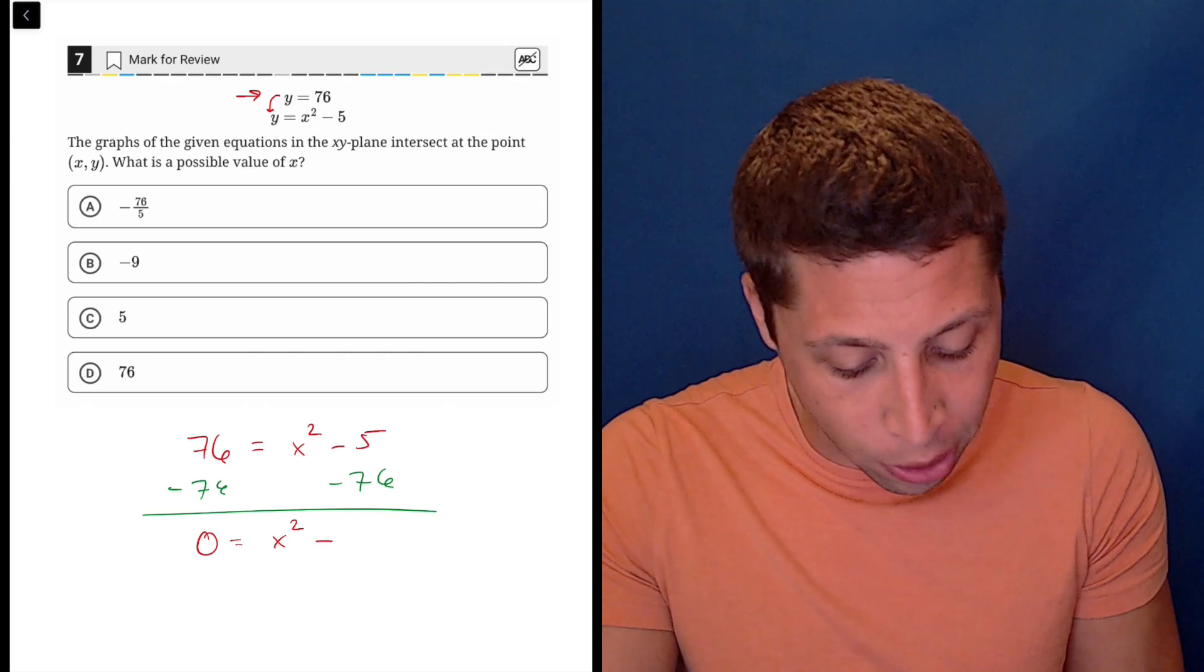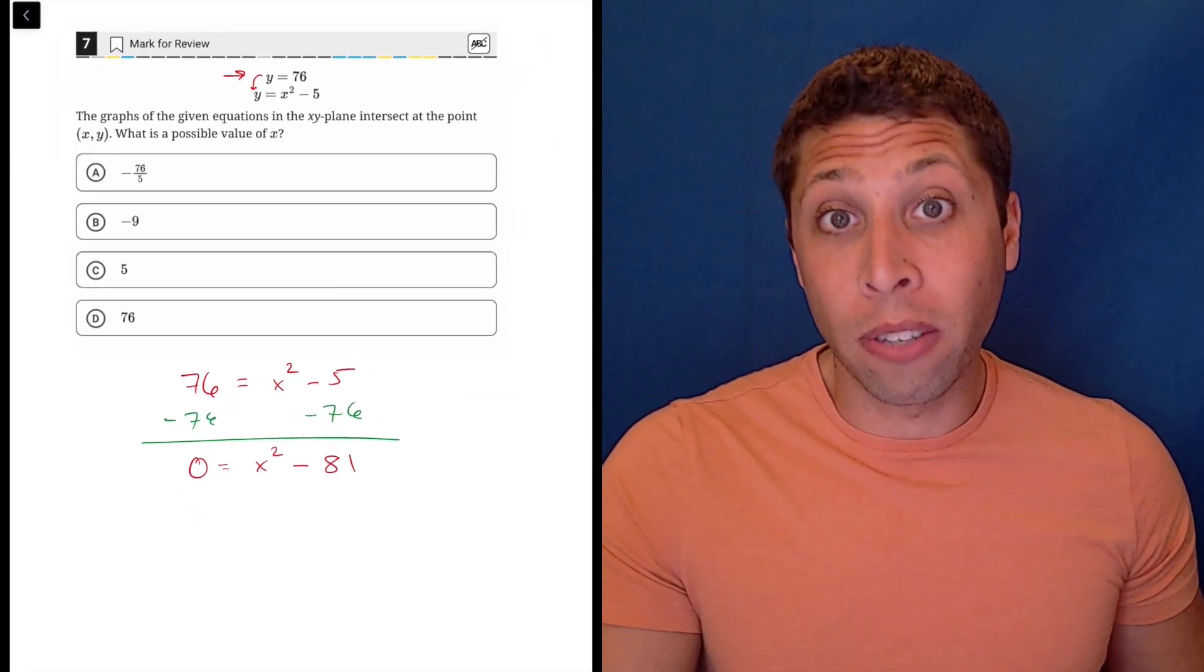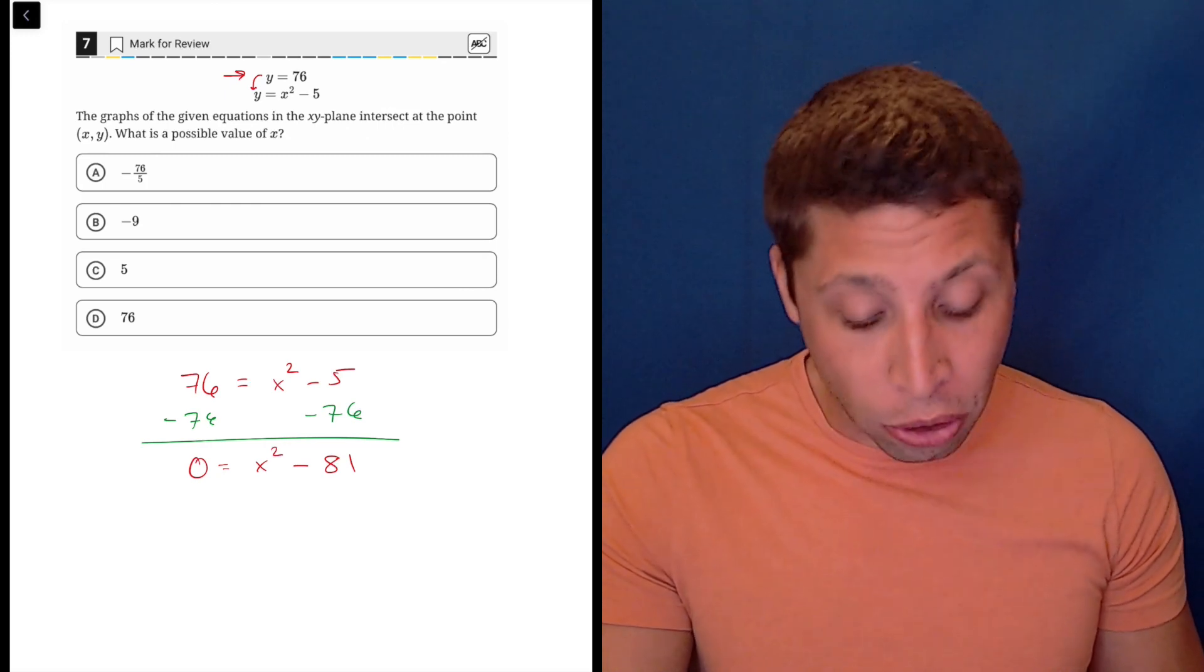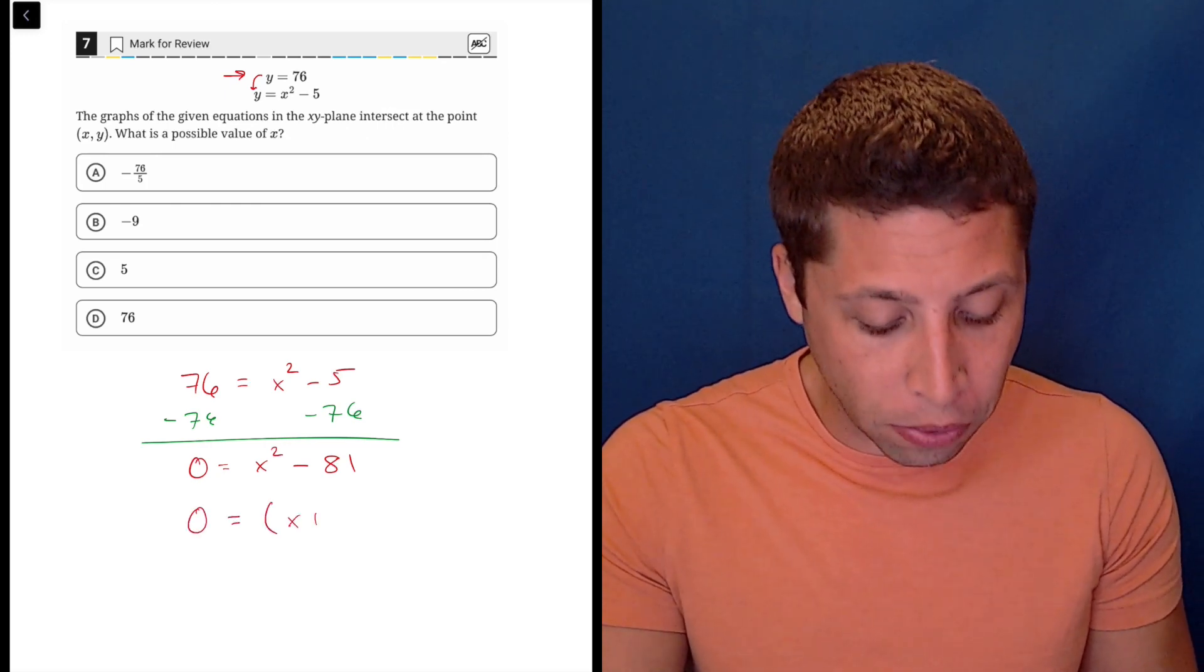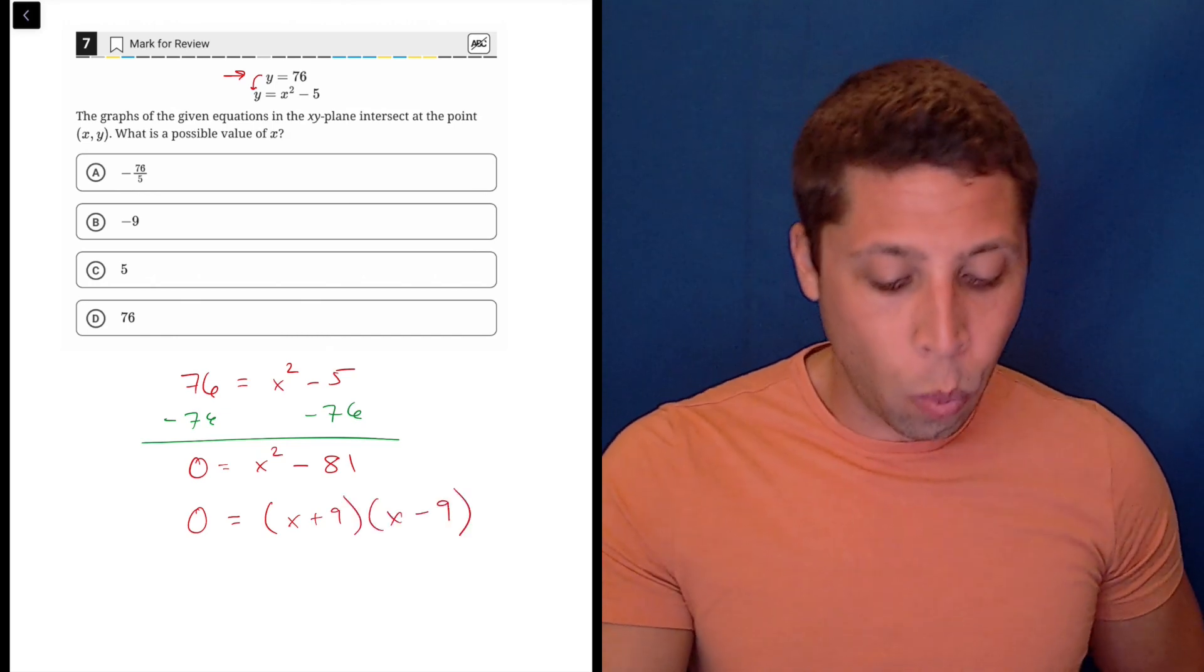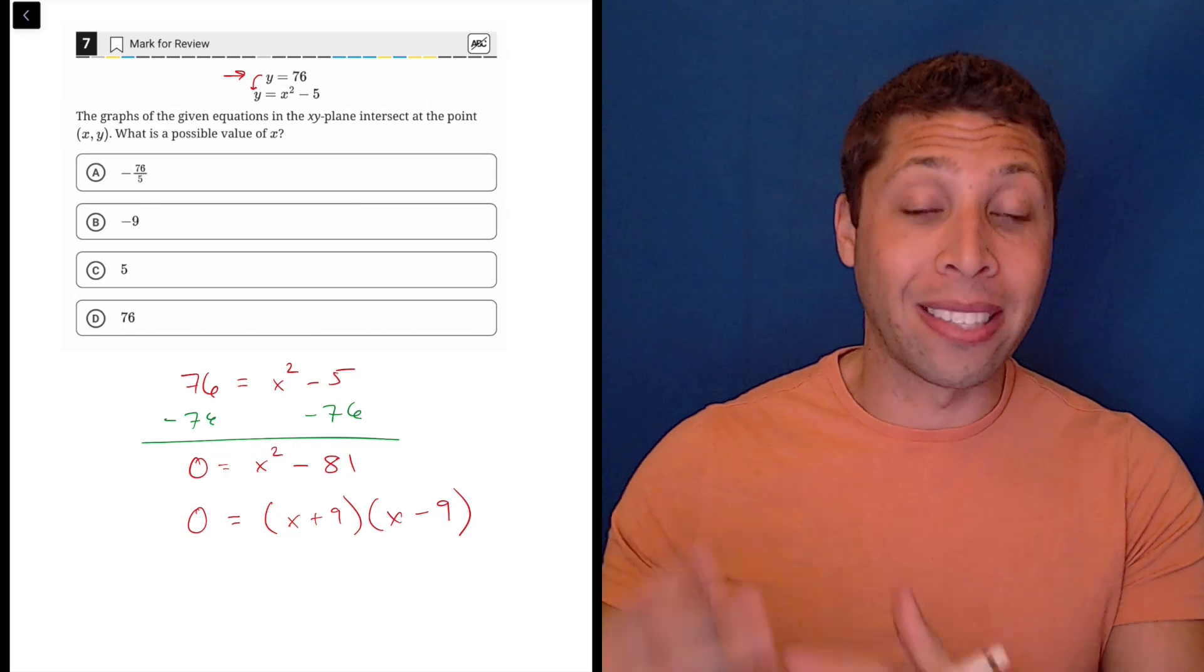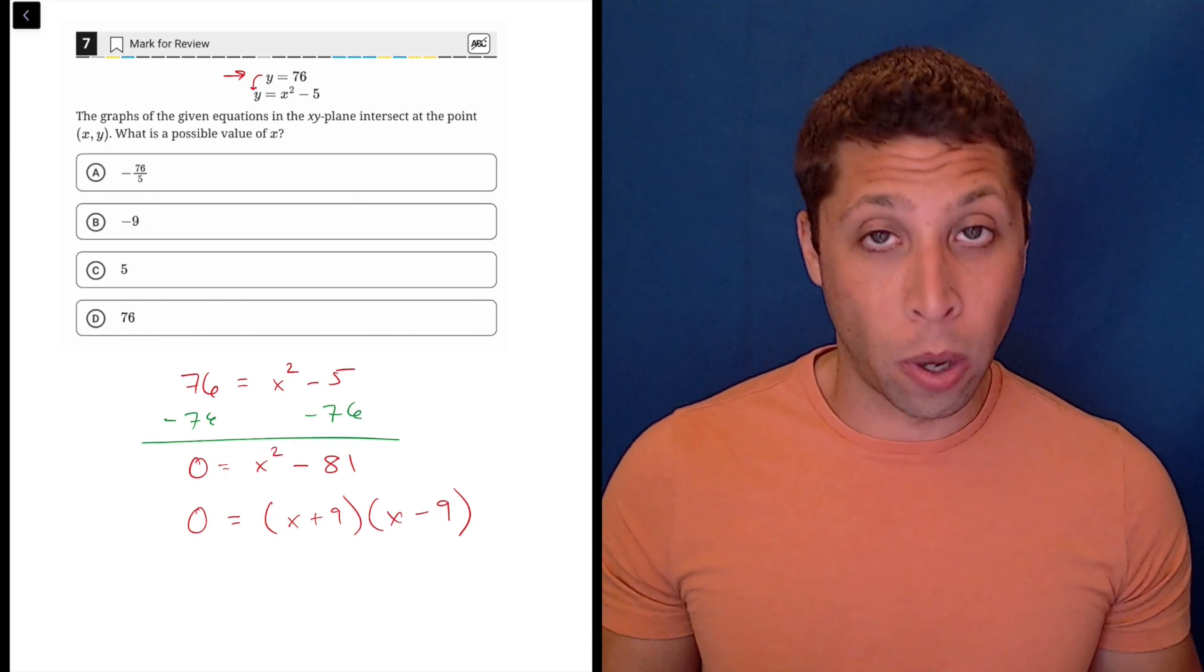So zero equals, in this case, X squared minus 81 and then we're supposed to factor. And this is one of those special factoring situations where we would have difference of two squares. Hopefully, this looks familiar because it definitely comes up on the SAT. We would look for taking basically the square root of each component. And then those are the two terms, one is a plus, one is a minus.